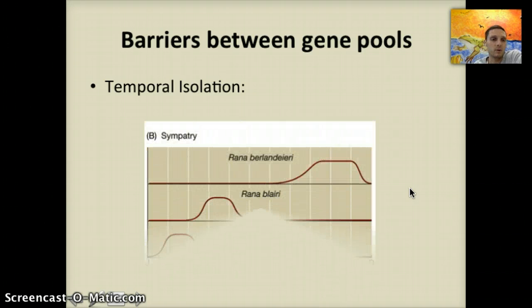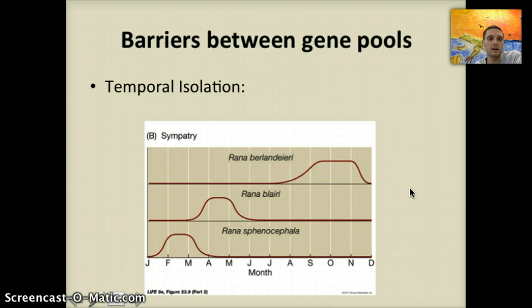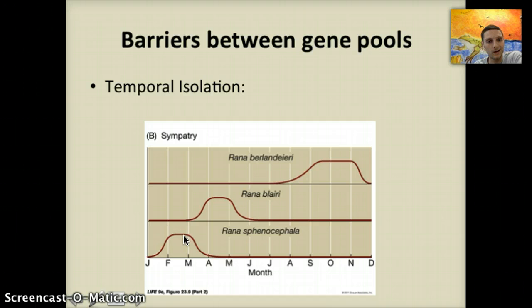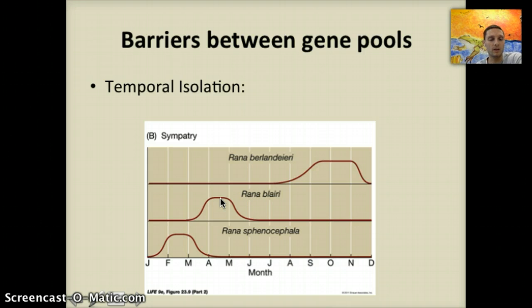A third type is called temporal isolation, seen often in mating patterns or in plants and the release of pollen. Temporal refers to time. In this diagram, we have three different species reproducing at different time periods of the year. They are not able to reproduce with one another because they are separated by when they actually do reproduce. For example, if different species of plants release their pollen at different times of year — different parts of spring — they're not going to crossbreed with one another, so they become isolated.